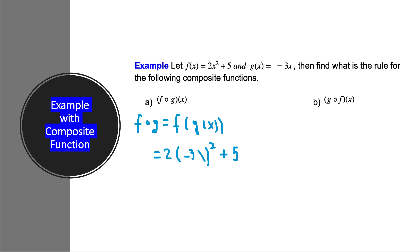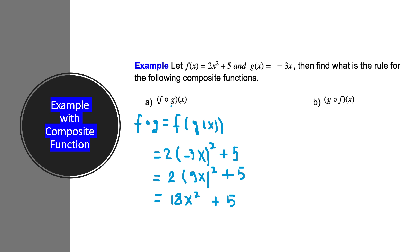And now we use the mathematical operations — a little algebra. Here is a 2, and minus 3x squared is going to be 9x squared. Then we multiply, distributing the number 2 inside the parenthesis. 2 times 9 is 18, giving us 18x squared plus 5. So the new function, f∘g of x, is going to be 18x squared plus 5.